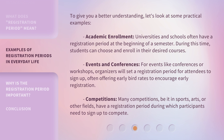To give you a better understanding, let's look at some practical examples. Academic Enrollment: universities and schools often have a registration period at the beginning of a semester. During this time, students can choose and enroll in their desired courses. Events and Conferences: for events like conferences or workshops, organizers will set a registration period for attendees to sign up, often offering early bird rates to encourage early registration.